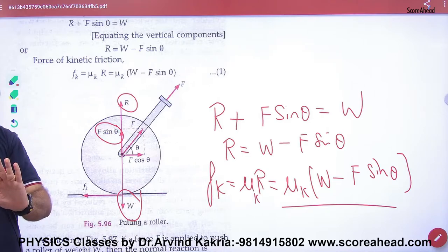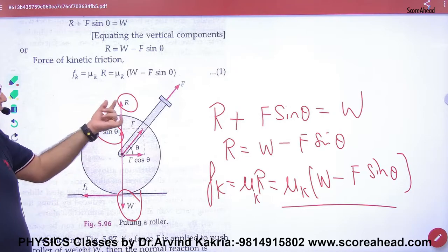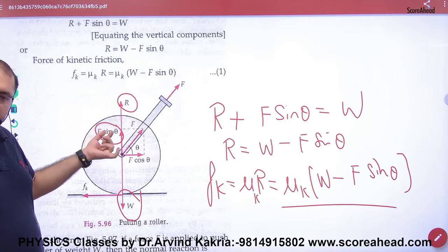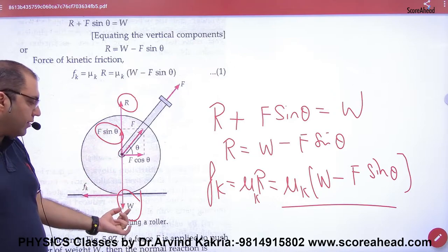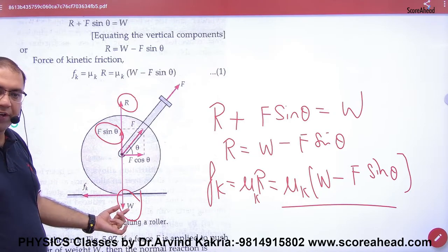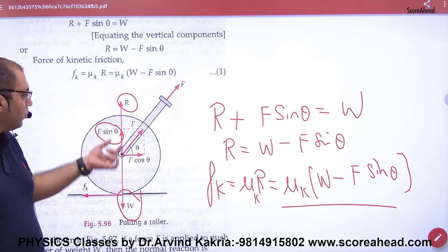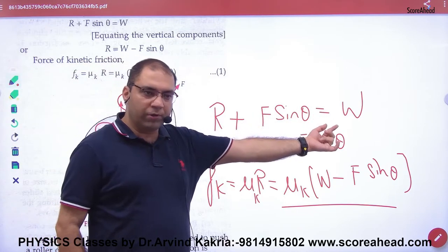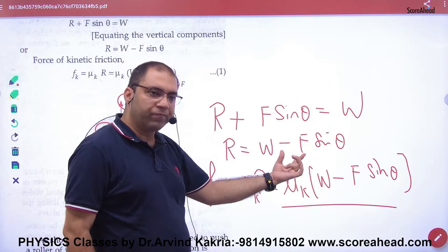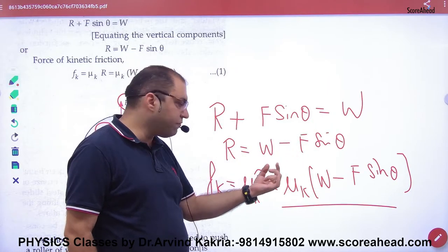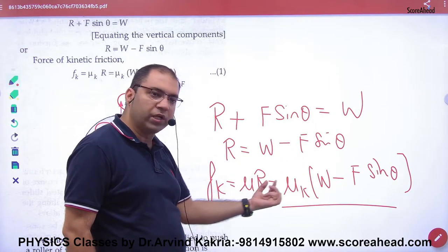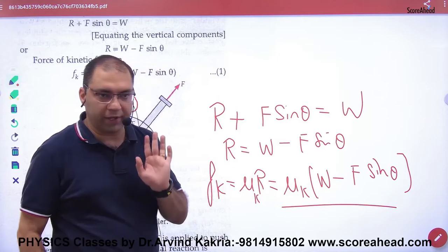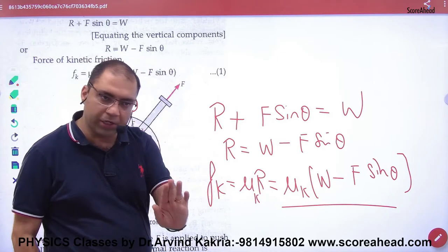To recap: normal reaction R acts upward, F sin theta acts upward, and weight W acts downward. So R plus F sin theta equals W, giving R equal to W minus F sin theta. Substituting into the friction formula gives the force of friction for the pull case.